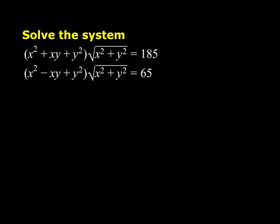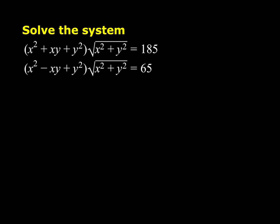And let's get started. So we do have a system which is somewhat radical. The first equation is x squared plus xy plus y squared, multiplied by the square root of x squared plus y squared, is equal to 185. And the second equation is x squared minus xy plus y squared, multiplied by the square root of x squared plus y squared, is equal to 65.